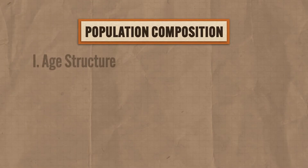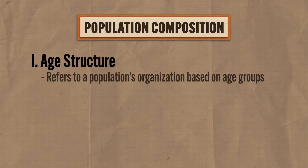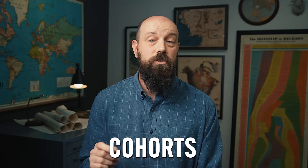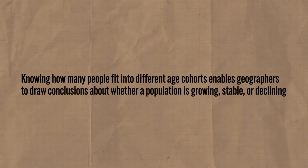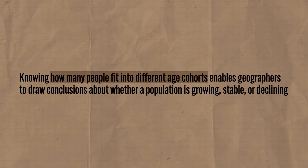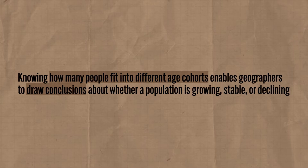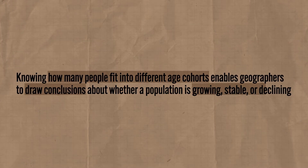So the age structure of a population refers to, not surprisingly, its organization based on age groups, and we refer to these groups as cohorts. And this is important because knowing how many people fit into different age cohorts enables geographers to draw conclusions about whether a population is growing, stable, or declining. Put that in your pocket, because we're going to come back to it in a minute.